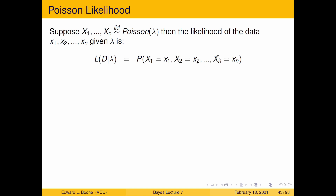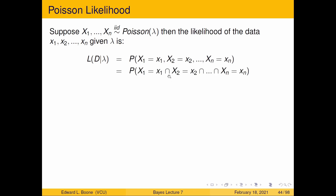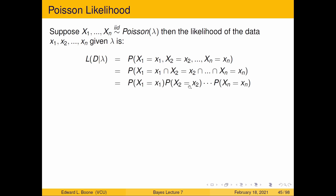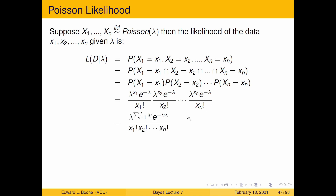These commas mean 'and,' which is the intersection. Since the observations are iid — independent and identically distributed — we can multiply the probabilities together. Each one can be looked at individually, and we just take each distribution function and add a subscript to each of the x's.